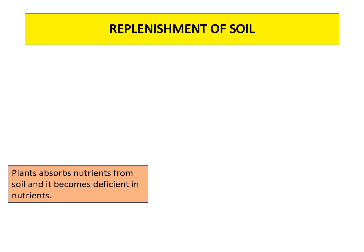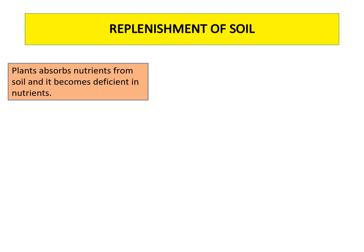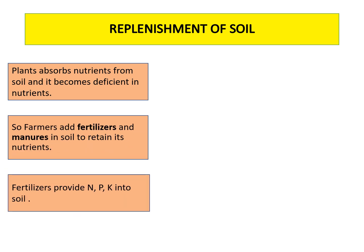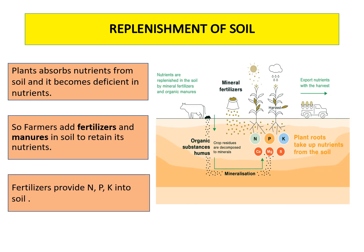If plants continuously absorb nutrients from the soil, the soil will become deficient in nutrients. So, in order to retain its nutrient value, farmers generally add fertilizers and manures to the soil. Organic manures and fertilizers provide nitrogen, potassium, and phosphorus to the soil, so the soil gets replenished in nutrients.